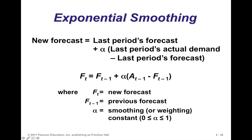If alpha equals 0, no adjustment is made — the next period forecast equals the last period forecast. If alpha equals 1, the F(t-1) terms cancel out, leaving just the last period's actual — which is essentially the naive method. So you want to find a happy medium. You need to select a value for alpha, which may require experimentation: try different values, evaluate forecast accuracy, and settle on a value. In Excel, Solver can optimize alpha based on a forecast quality criterion.